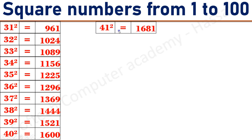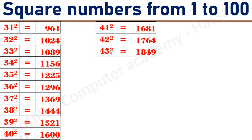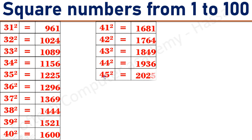41 square equals 1681. 42 square equals 1764. 43 square equals 1849. 44 square equals 1936. 45 square equals 2025.